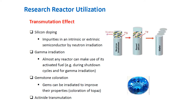Neutron transmutation doping, or NTD, is defined as the process of creating impurities in an intrinsic or extrinsic semiconductor by neutron irradiation, thereby increasing its value for various applications. Candidate materials for NTD include gallium arsenide, gallium nitride, gallium phosphide, germanium, indium phosphide, indium selenide, mercury cadmium telluride, and silicon, among others. Of these, silicon is currently the only target utilized for commercial NTD applications and is the most widely used semiconductor material internationally.